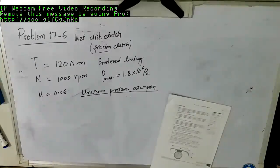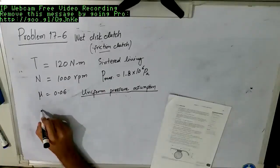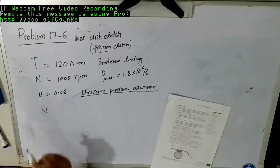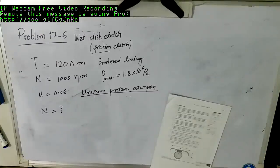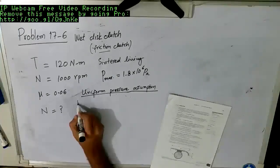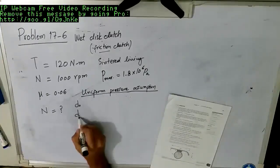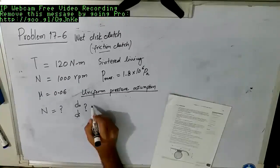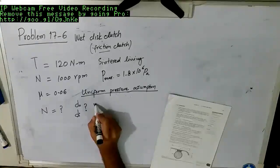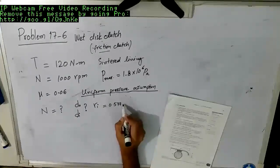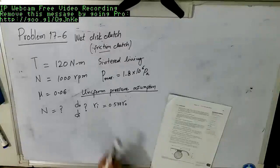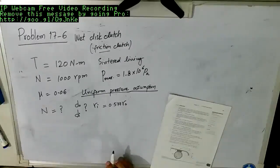We have studied two conditions, one is uniform pressure and the other one is uniform wear. In this problem we are given that we should assume uniform pressure condition here. Actually, what we need is the quantity N, which is the number of disc pairs. We are also required to find out the outside and inside diameters.